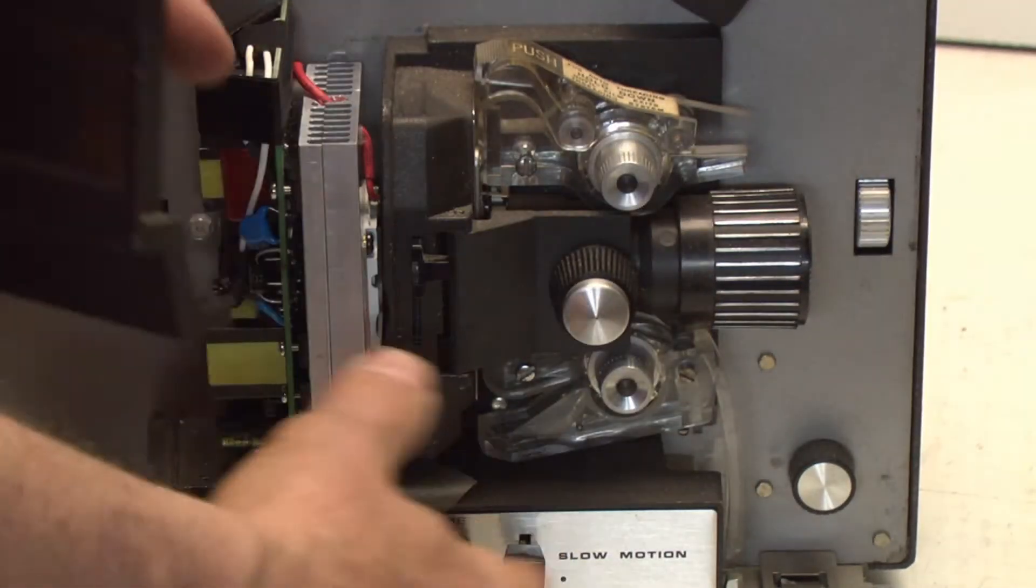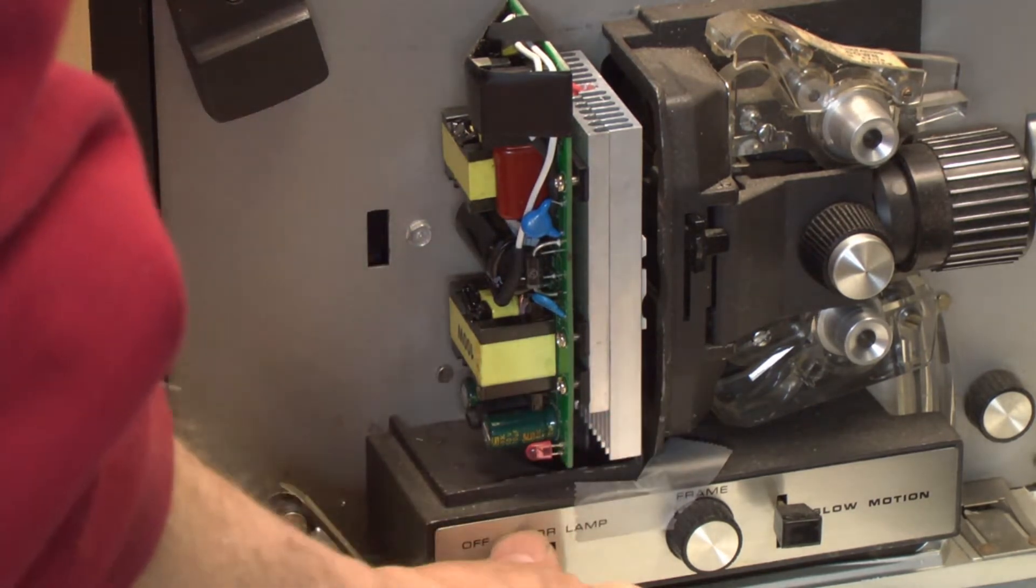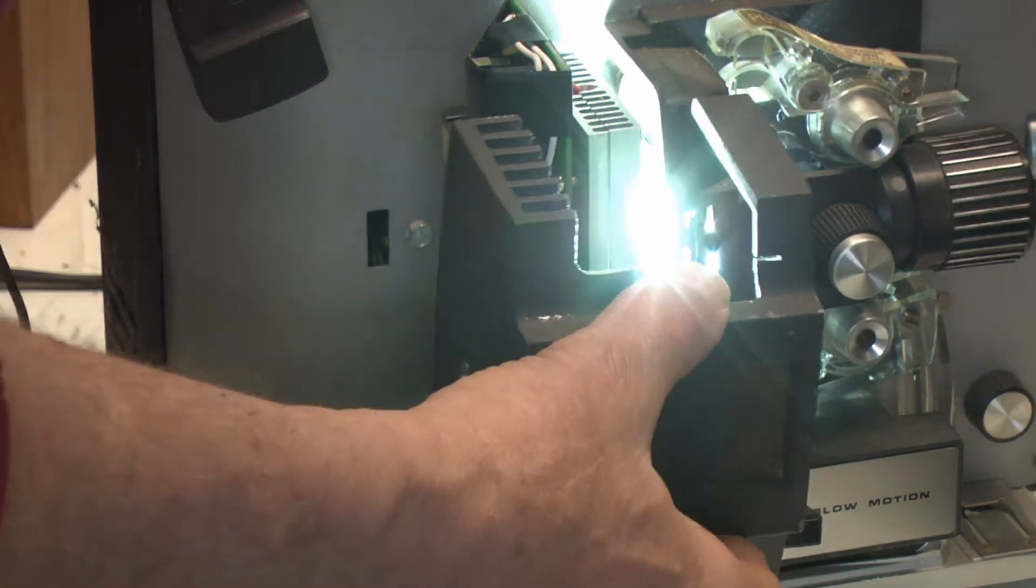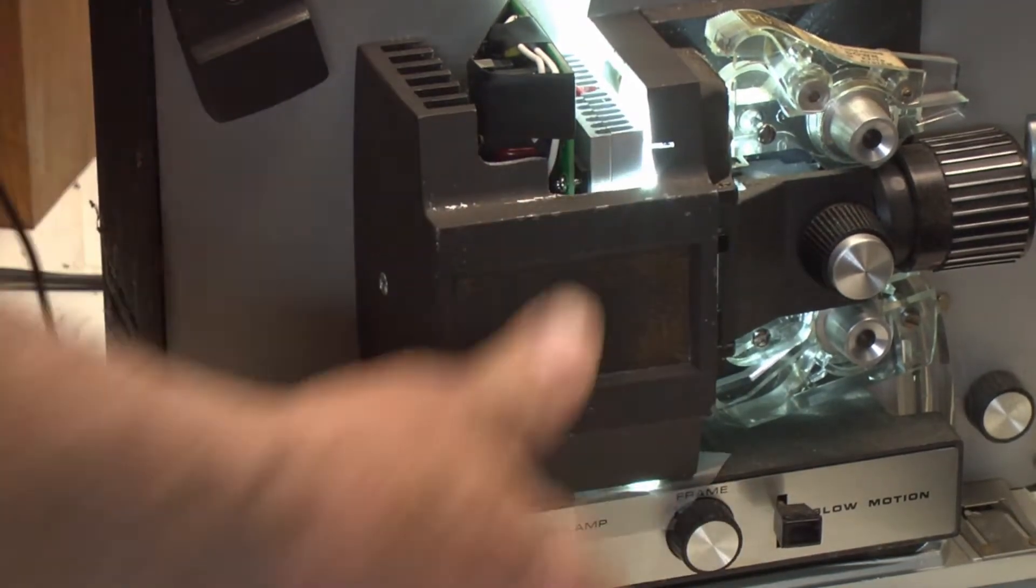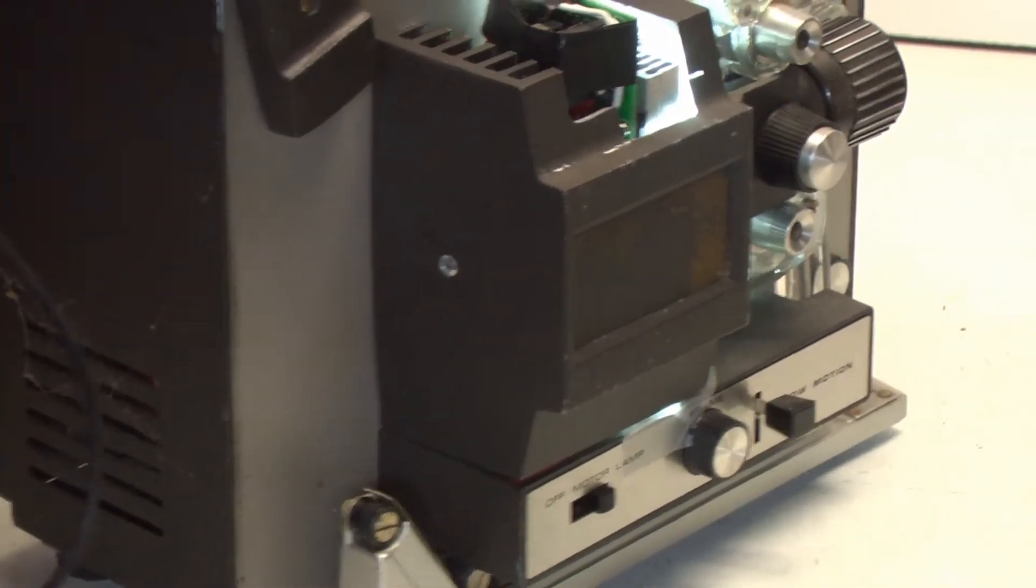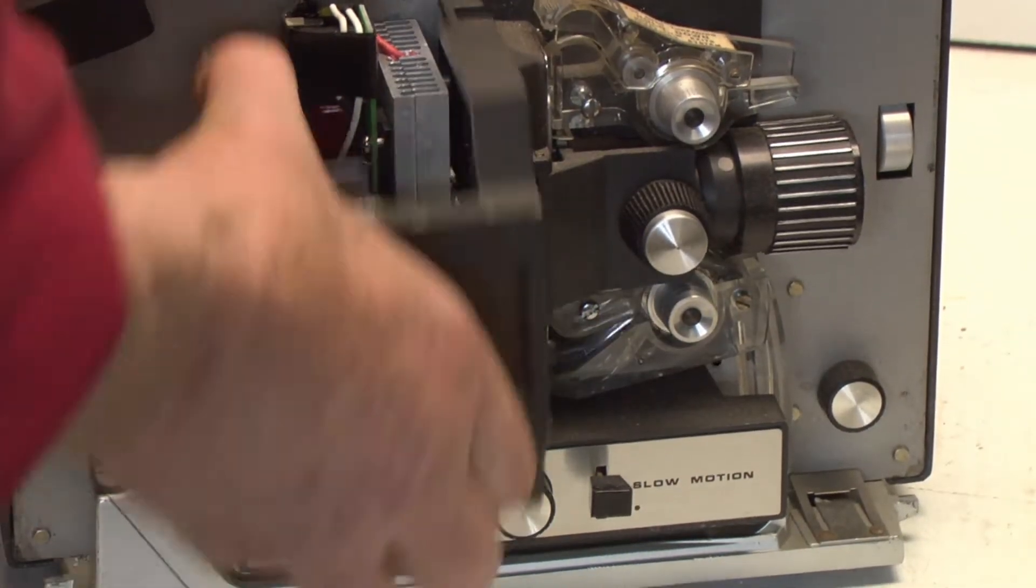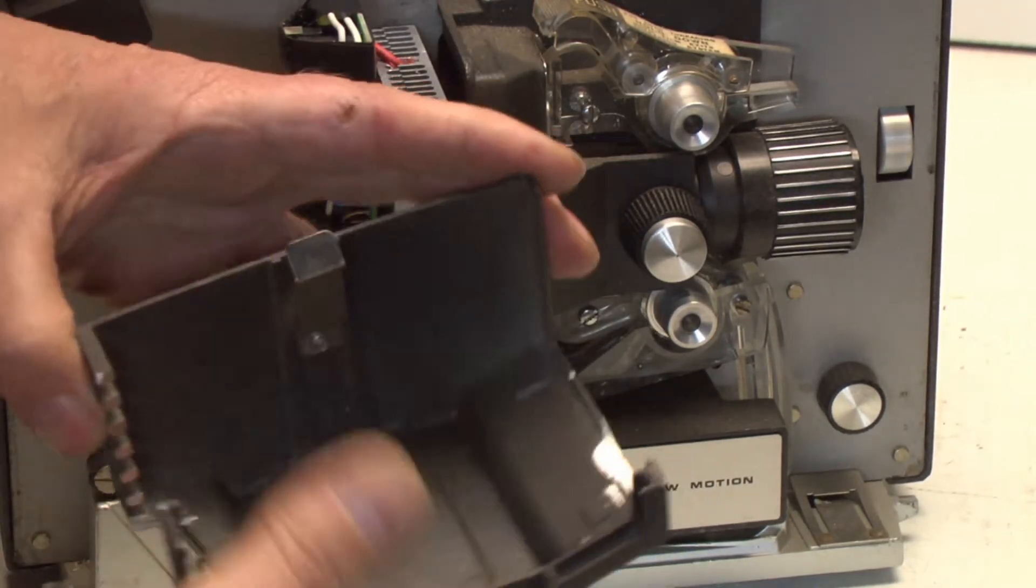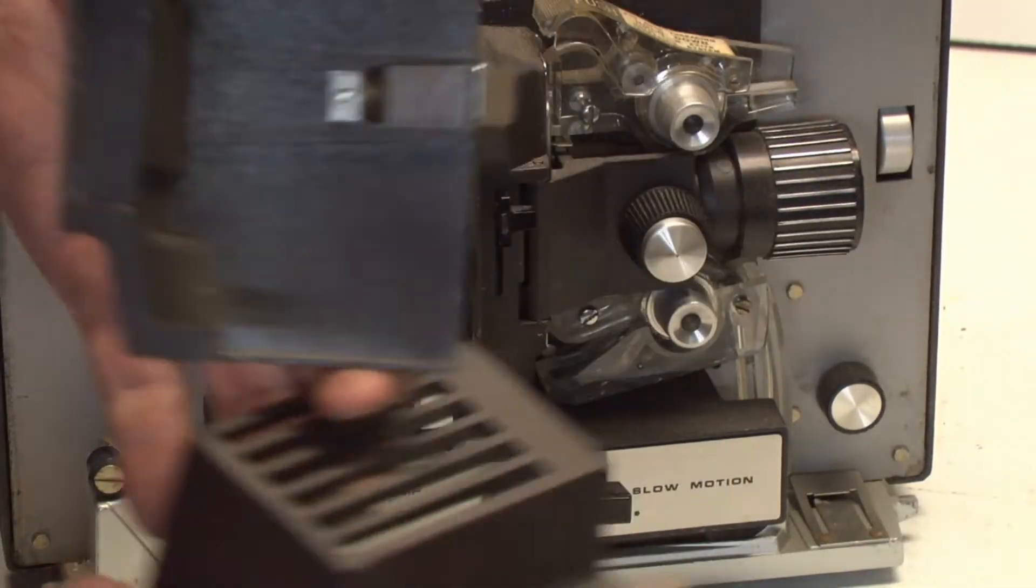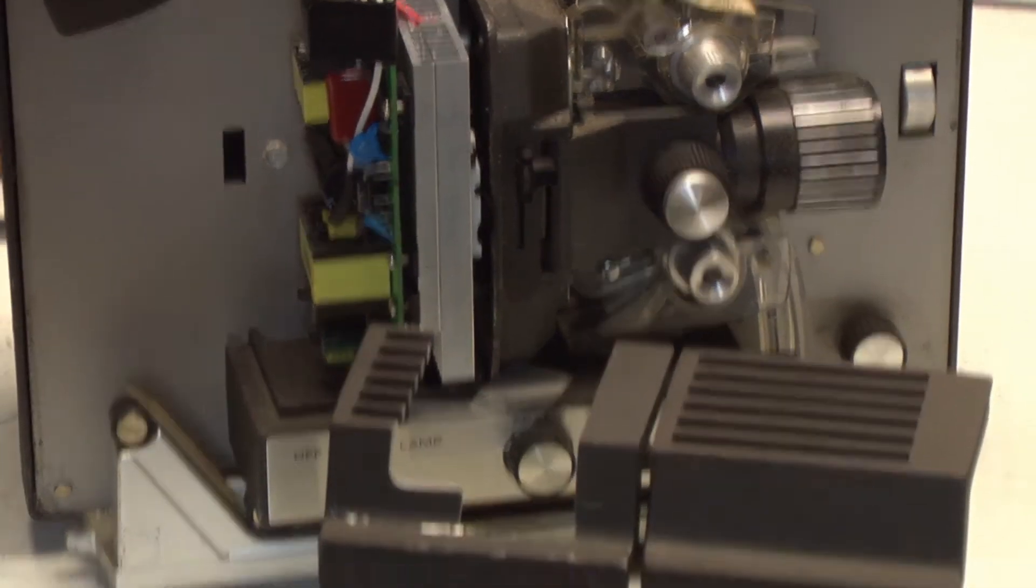So if you want to put a lamp cover back on this unit, if you don't like all the light coming out, you can modify your original cover like so. Take that heat shield out, and then you have to take a hacksaw. Let me show what I did here.